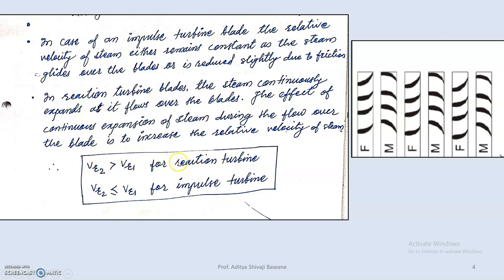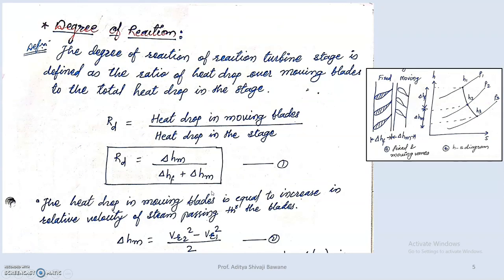The degree of reaction is defined as the ratio of the heat drop over a moving blade to the heat drop over a complete stage. One fixed blade and one moving blade together constitute a stage. So Rd (degree of reaction) equals ΔHm divided by the total heat drop across the stage, which equals heat drop across the fixed blade plus heat drop across the moving blade: Rd = ΔHm / (ΔHf + ΔHm).